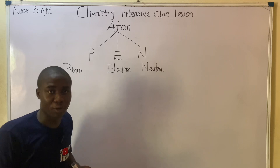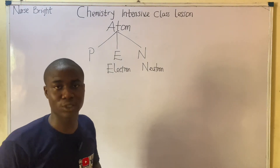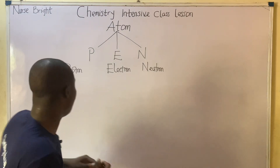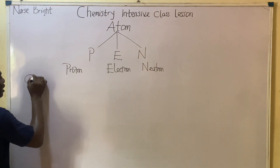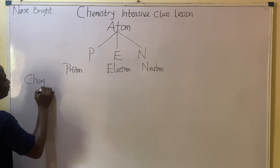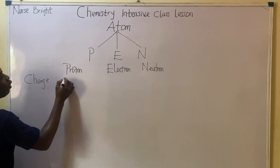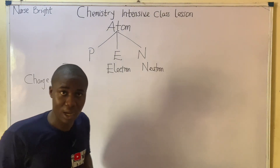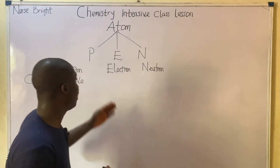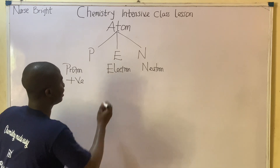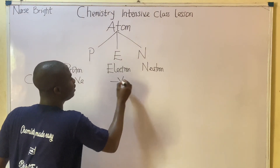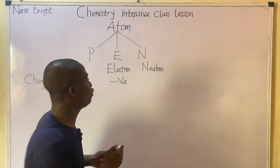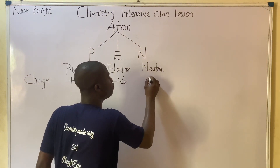These subatomic particles have their respective charges. Protons are always positively charged, electrons are negatively charged, and neutrons are neutral.